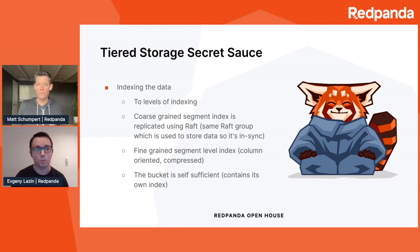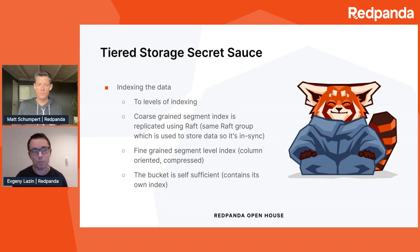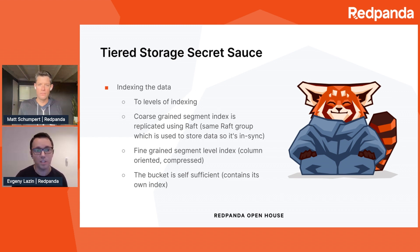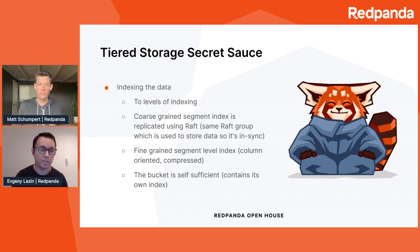Red Panda also has two levels of indexing. The first level is a coarse-grained index of uploaded segments. Every time we upload something, we replicate metadata about this upload between all the nodes joined in the same Raft group, and the data is stored in the same log as the data the user produces. This makes the container of the bucket self-sufficient and self-descriptive. We also have a fine-grained index, which contains information about the data inside individual segments. This index is built on the fly when a segment is downloaded to local storage — it's very fast, columnar, and compressed.